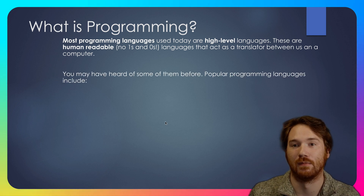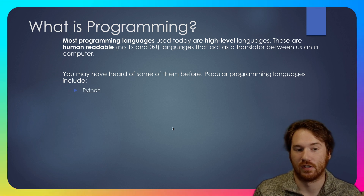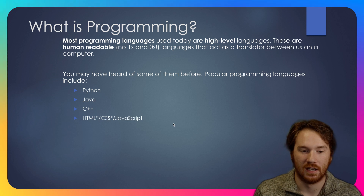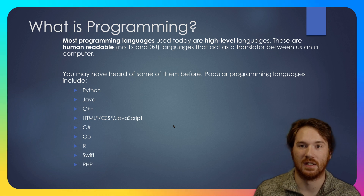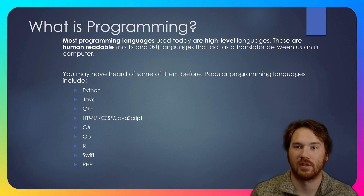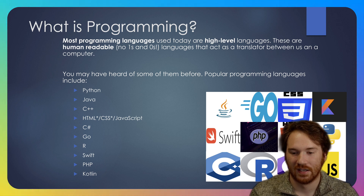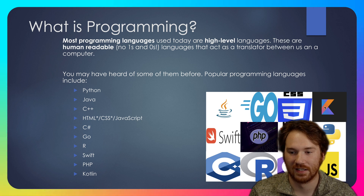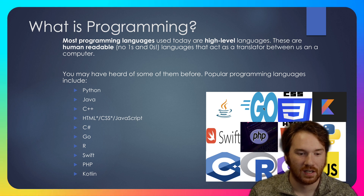You've probably heard some programming languages in popular culture. Examples include Python, Java, C++, HTML, CSS, JavaScript, C Sharp, Go, R, Swift, PHP, and Kotlin. These are just some of the programming languages people use to write modern programs — and they're all high-level programming languages. There are many programming languages out there; these are some of the most popular, but there are so many more.